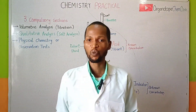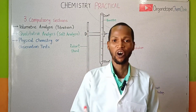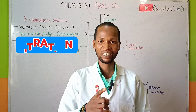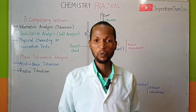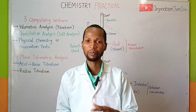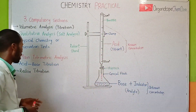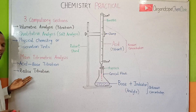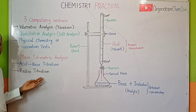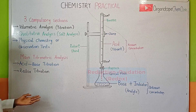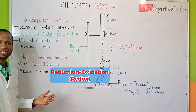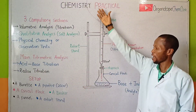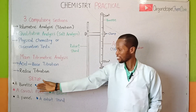In this lesson we are diving into one of the most guaranteed questions in every WAEC or GCE chemistry practical, which is titration. The two main titrometric analyses you may be tested on are acid-base titration and redox titration. Redox titration is the same as reduction-oxidation titration.